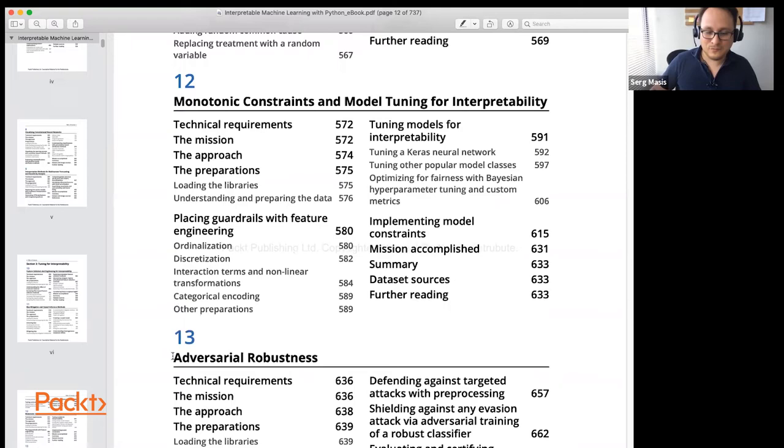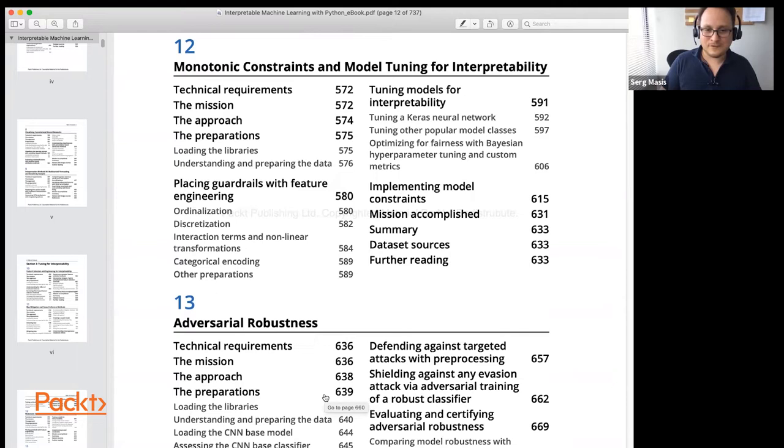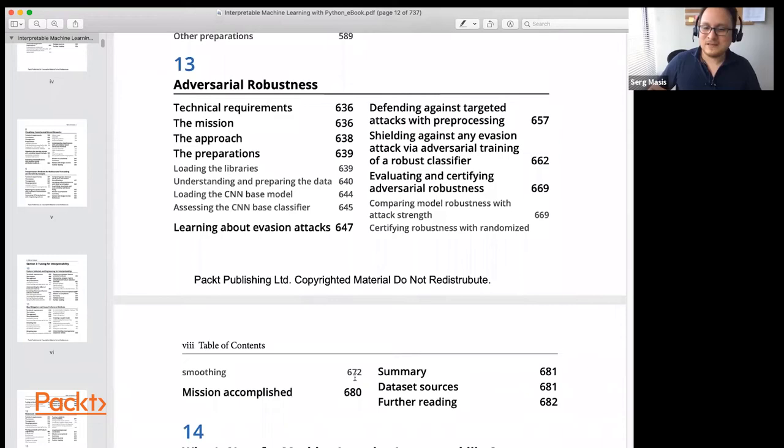Adversarial robustness is also one of my favorite chapters and is devoted to how to make sure that the model doesn't get tricked. And that's very important. Even when someone is not out to trick your model, if the model is not robust, it's going to be also vulnerable to noise, whether intentional or not. And that's not something you want. And so, I highly recommend looking into this chapter too.